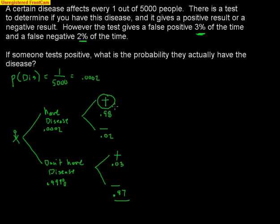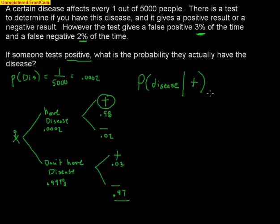That's how you decipher the meaning between a false positive and a false negative. Now, the question itself is a conditional probability. They say: what's the probability that somebody actually has the disease? The condition is that they tested positive — this has already occurred. So we're going to use the conditional probability formula: on top is the probability of having the disease AND testing positive, and on the bottom is the probability of testing positive.